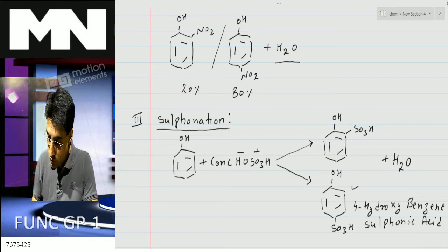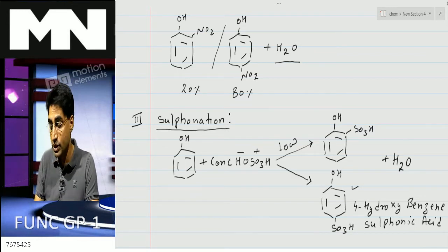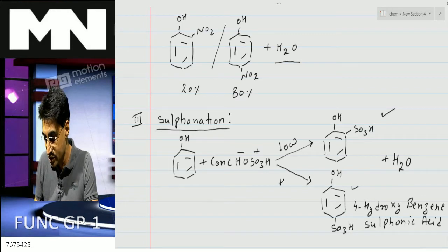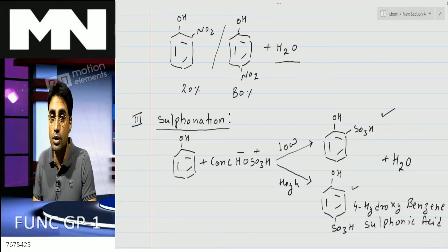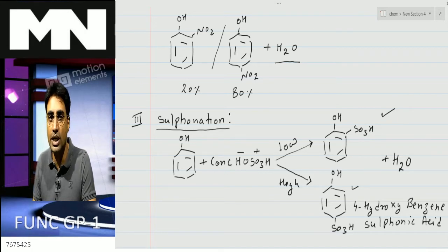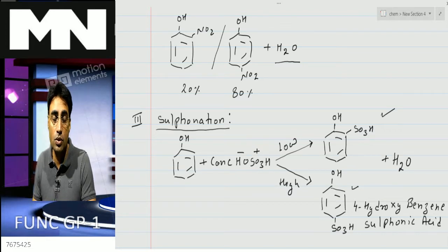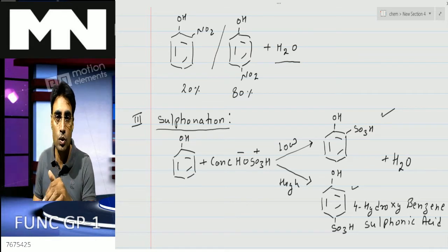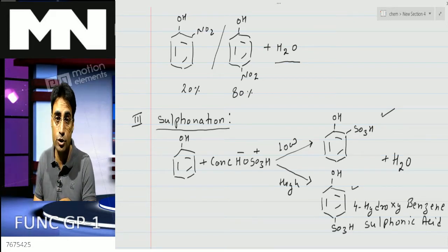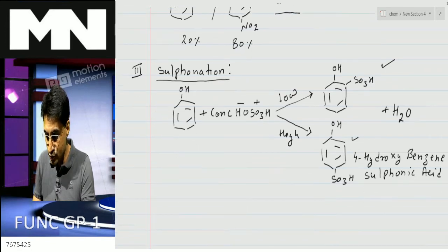Why do we get the ortho isomer at low temperature and the para isomer at high temperature? In the ortho isomer, the sulfonic acid group and OH group are close to each other and experience prominent repulsion, so the molecule has higher energy and is stable only at lower temperature. As temperature increases, the ortho isomer becomes less stable and the para isomer, being more stable, forms to a larger extent.